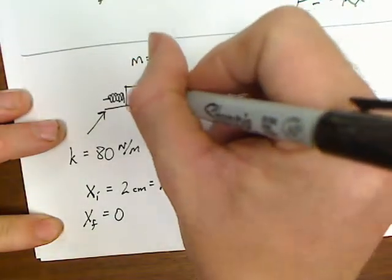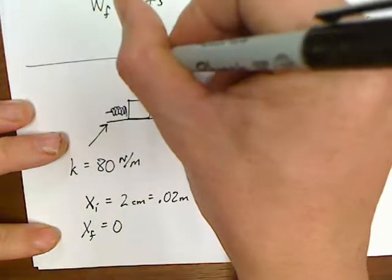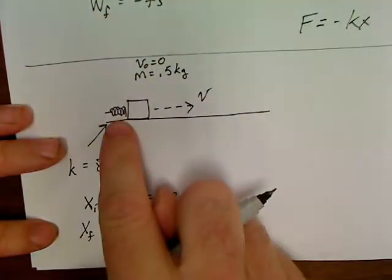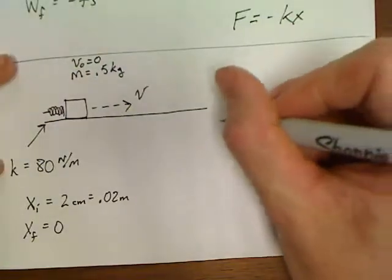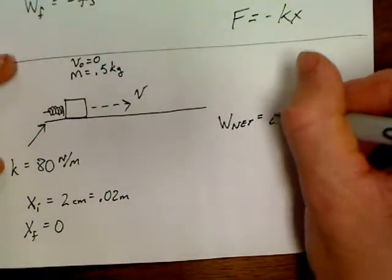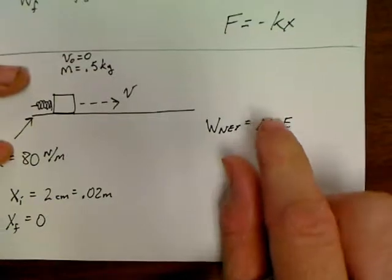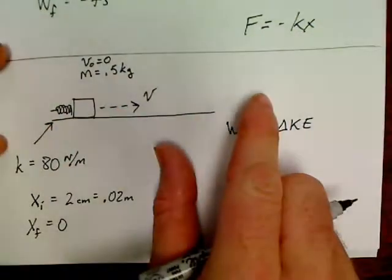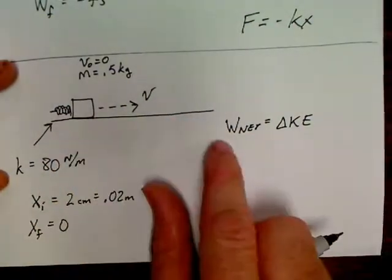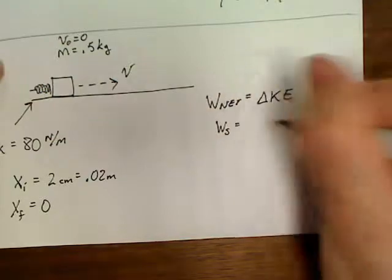The spring has an initial compression of two centimeters, which would be 0.02 meters. The spring is going to be uncompressed in the end, so x_f is zero. You could take this whole test and at least score one point on every question if all you did was write this: work net equals delta KE. What is the only kind of work being done? There's no friction, it's just a spring.